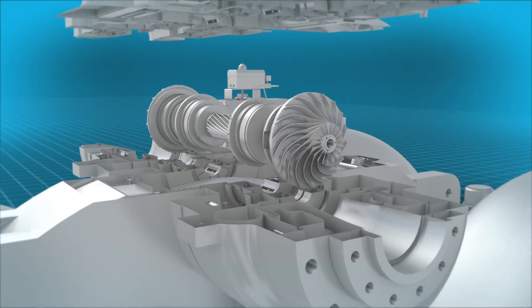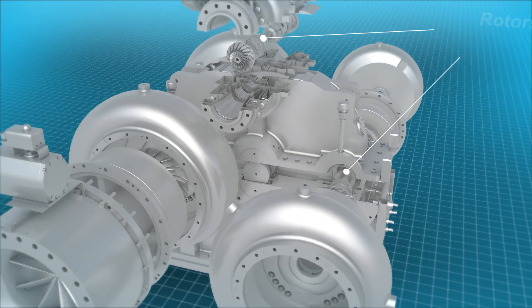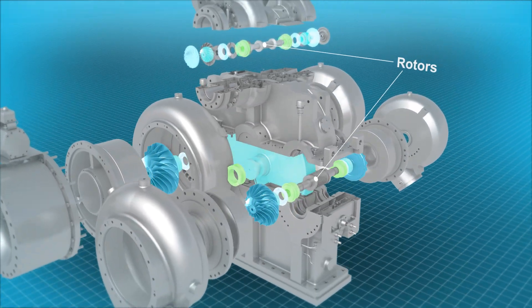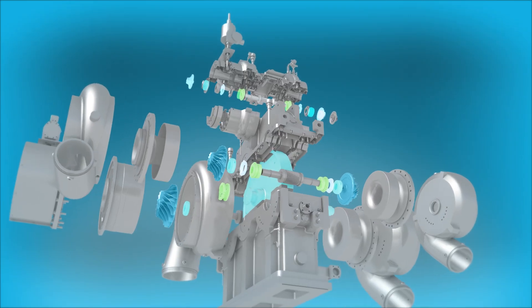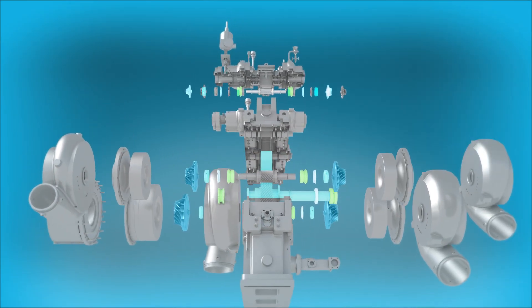Integrally geared compressors deliver multiple speed capability by placing rotors on separate pinions. Each compression stage runs at the optimum speed for high efficiency.